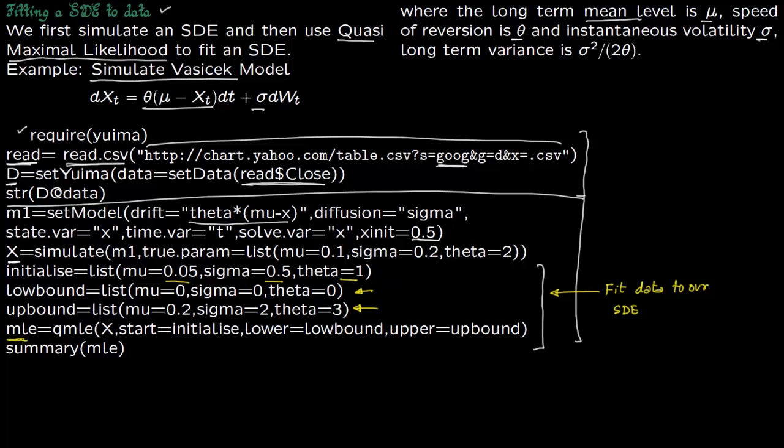This is the command for QMLE - the command for fitting the stochastic differential equation. So this is going to start at the initial point and then it will search between the lower bound and upper bound for the best possible maximum likelihood, and then you can see the summary which we are going to run.